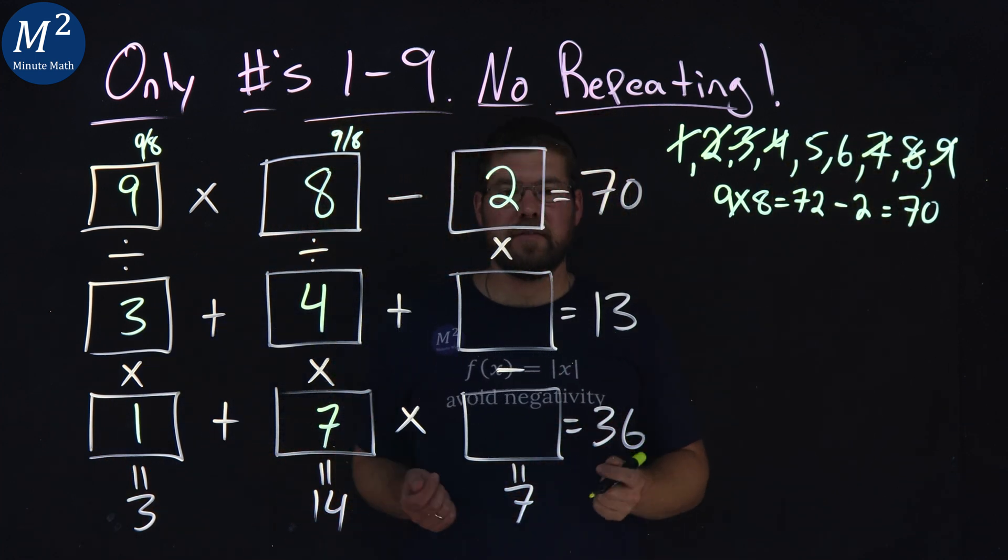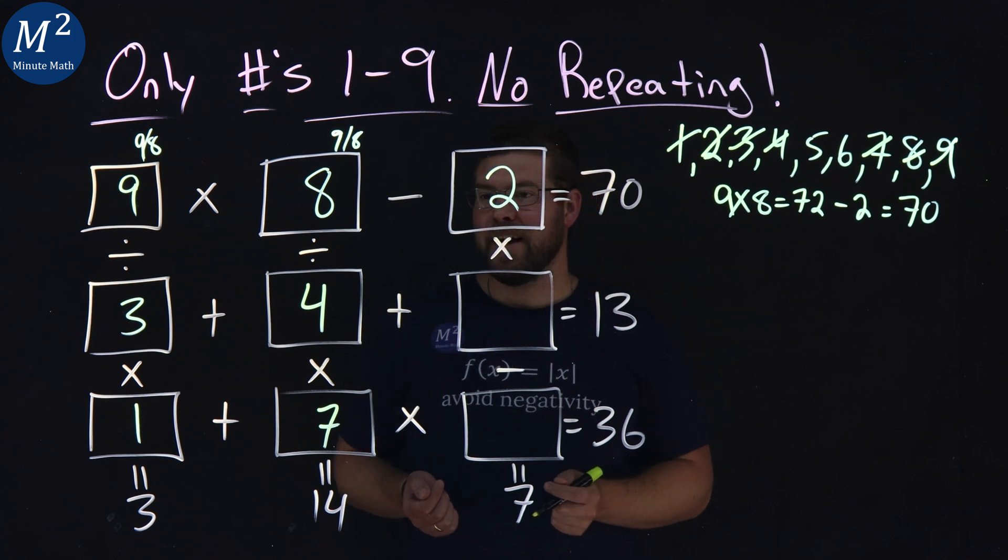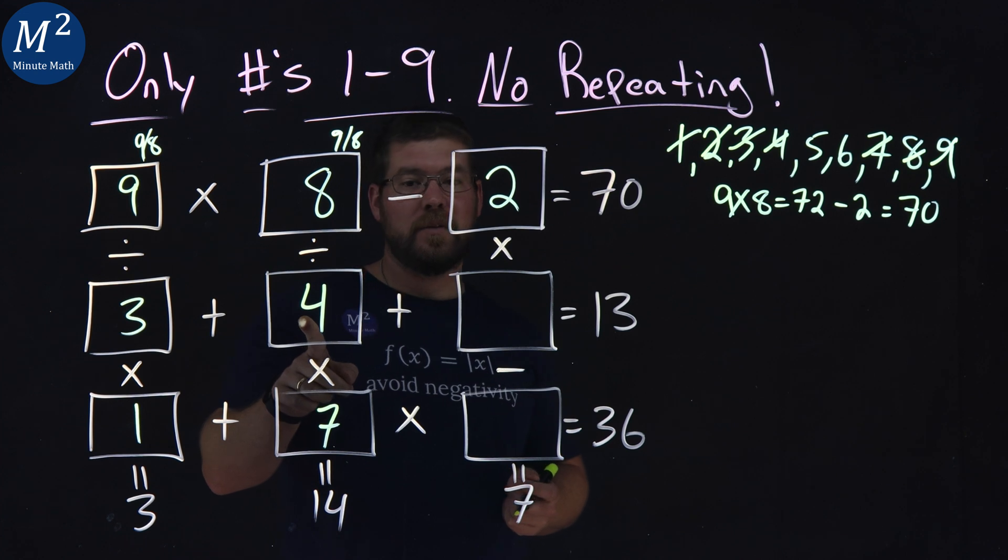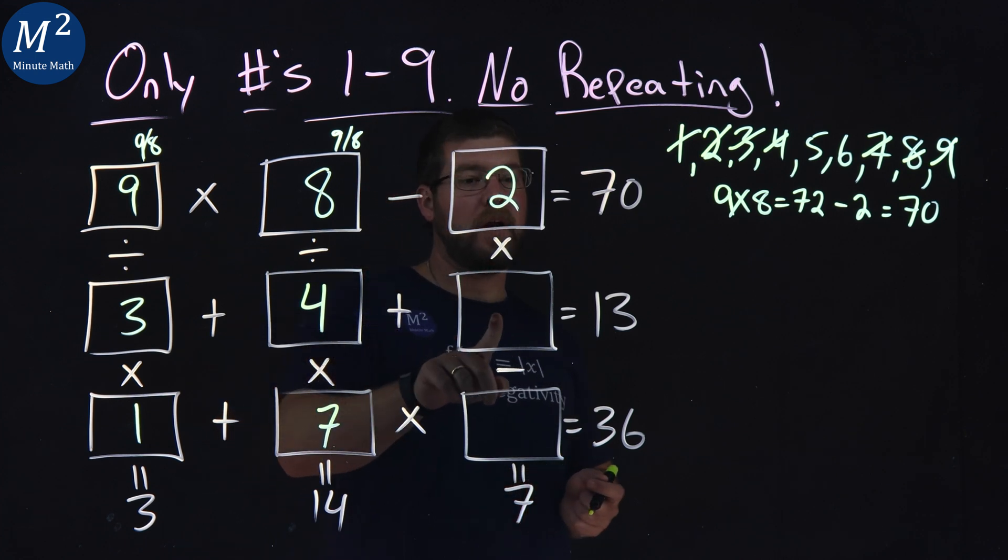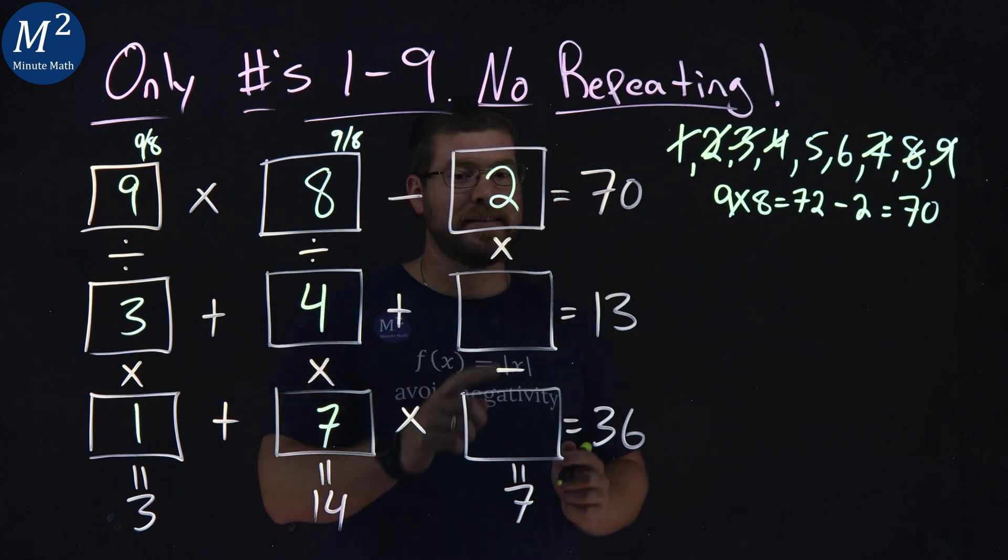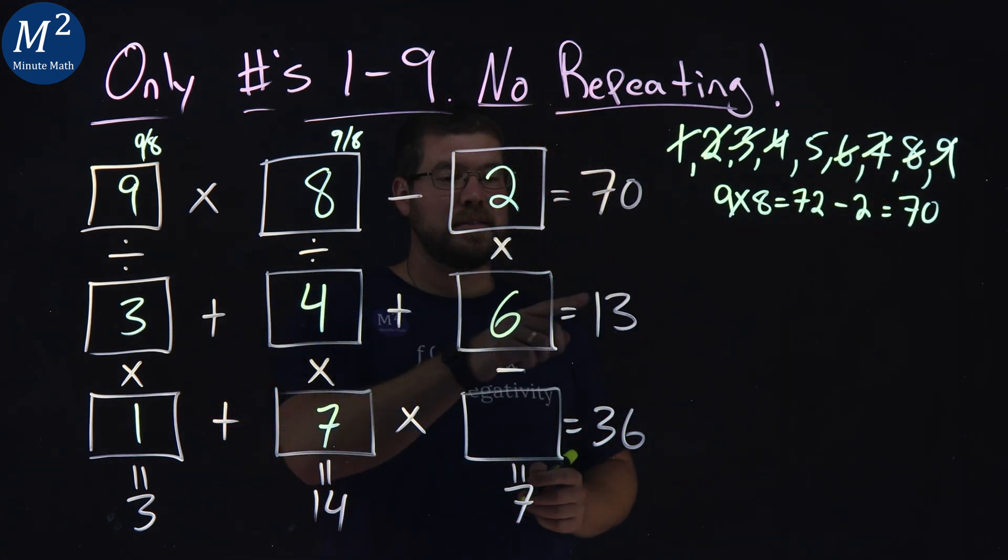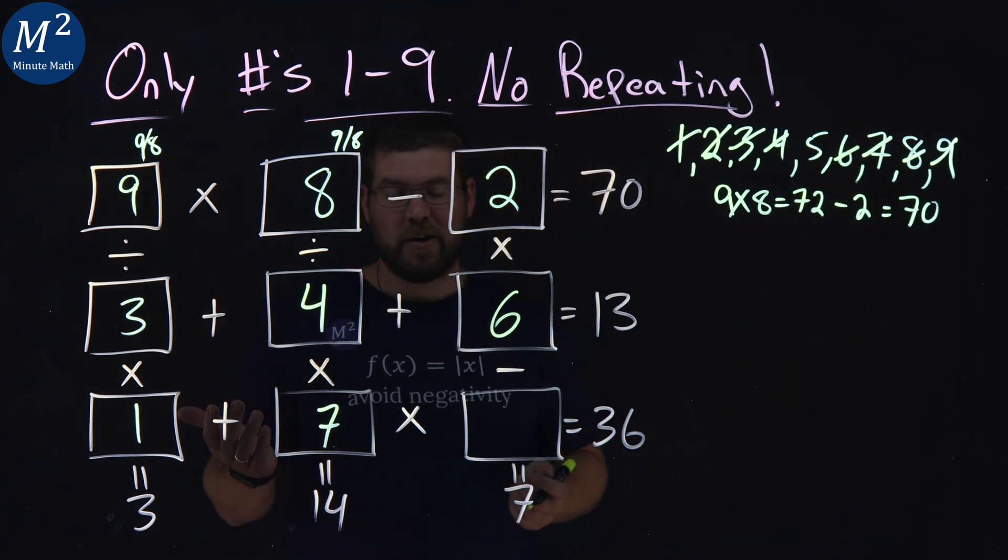All right, so now we just have fives and sixes left over. Let's go across the line here. This looks pretty easy. Three plus a four gives me a seven, plus one other number gives me a 13, and that's going to be a six.